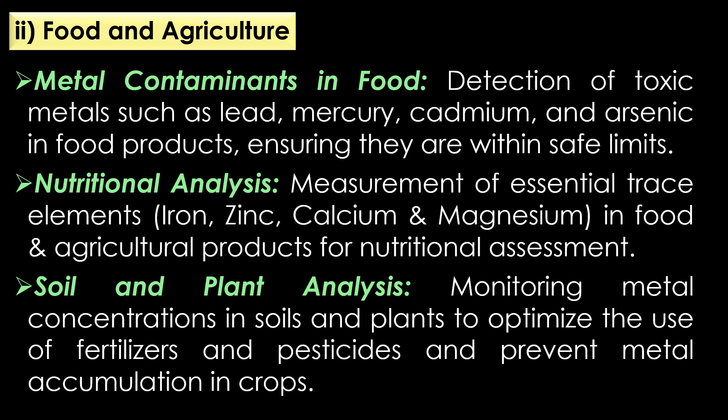In nutritional analysis, AAS is very useful for the measurement of essential trace elements like iron, zinc, calcium, and magnesium in food and agriculture products for nutritional assessment. In soil and plant analysis, AAS monitors the metal concentration in soils and plants to optimize the use of fertilizers and pesticides and prevent metal accumulation in crops.